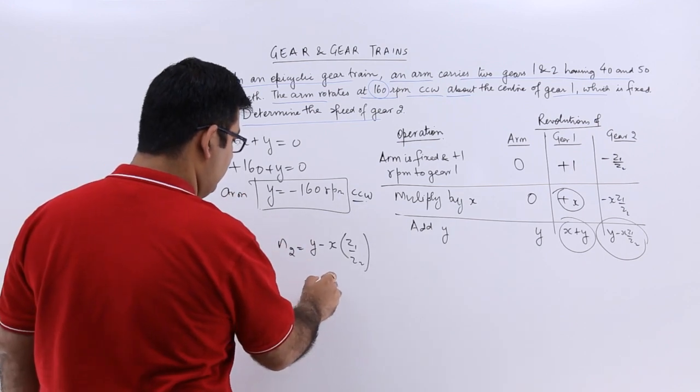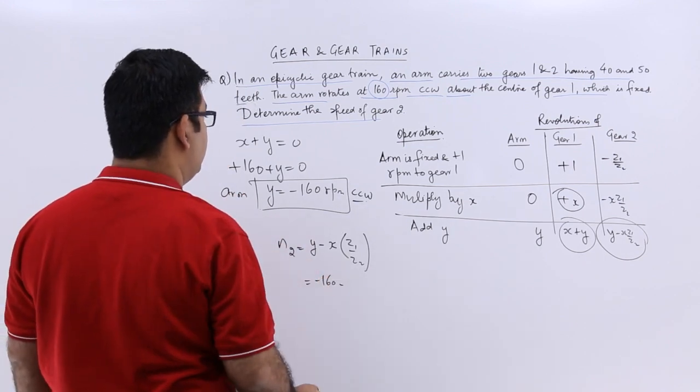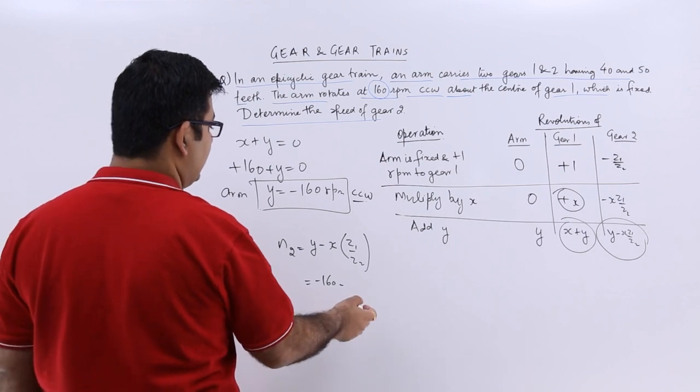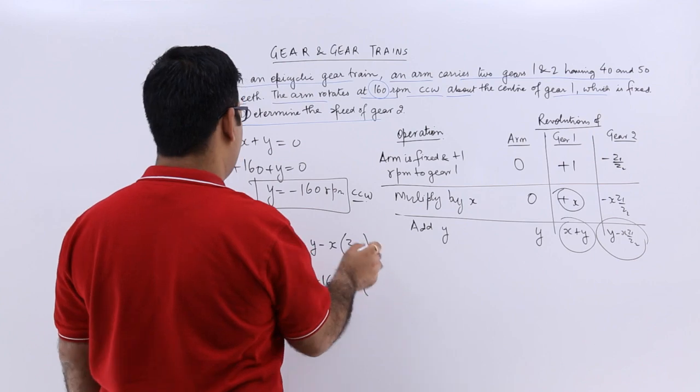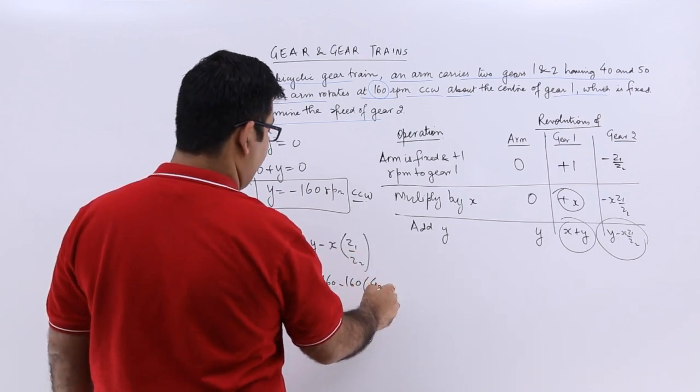So this would be minus 160 minus x. What is x? It is plus 160 into z1 is how much? 40 by 50.